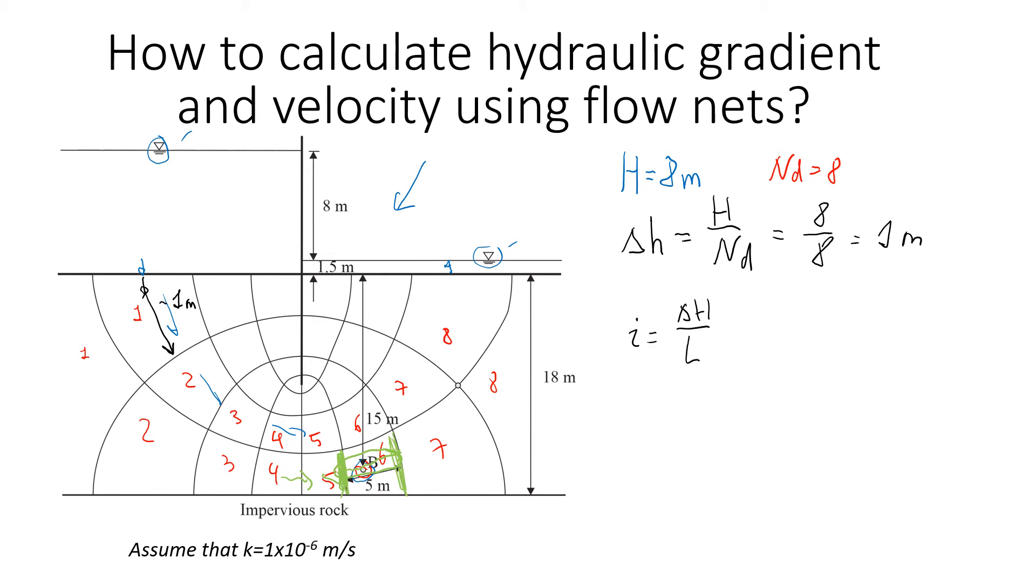It doesn't matter that point B is in the middle of the drop or somewhere inside the drop. We still need to know these two points where it starts and where it finishes, because we know delta h for each drop. So we know that delta h will be 1 meter. In this case, we're going to write delta h divided by L. Delta h is 1 meter, and the distance between these two equipotential lines is given to us as 5 meters, so it will be 0.2. So hydraulic gradient for point B will be 0.2.